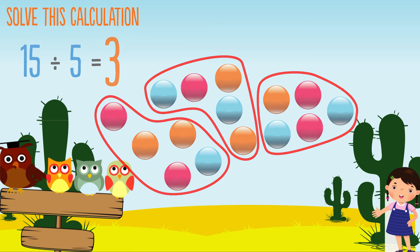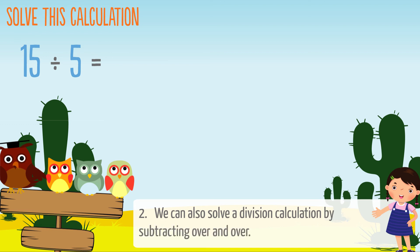We can also solve a division calculation by subtracting over and over. This is known as repeated subtraction. 15 divided by 5.